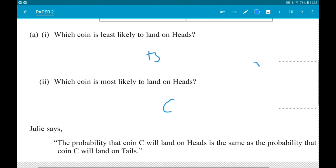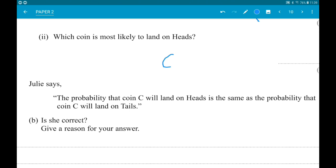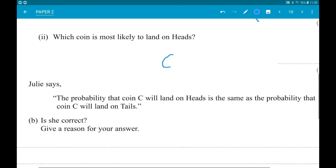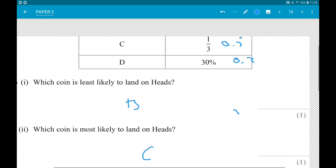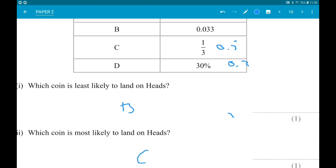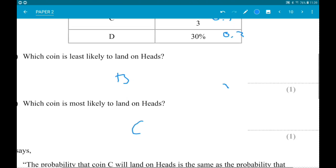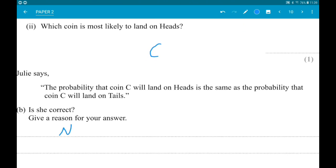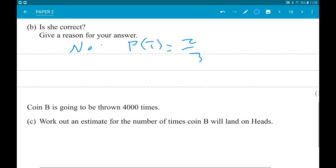Part B: Julie says the probability that C will land on heads is the same as the probability that C will land on tails. Is Julie correct? You must give a reason. The probability of heads with C is one third. The only other thing that can happen is tails. So she is not correct. The probability of tails is two thirds.